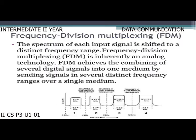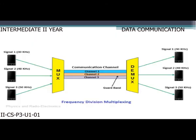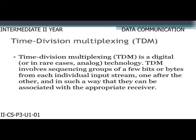Frequency division multiplexing (FDM): the spectrum of each input signal is shifted to a distinct frequency range. FDM is inherently an analog technology that achieves the combining of several digital signals into one medium by sending signals in several distinct frequency ranges over a single medium.